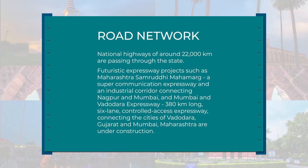Maharashtra Tourism Development Corporation has led to tremendous infrastructure development. The state is well connected to major industrial and consumption centers through road, rail, air, and port connectivity. With power generation capacity of over 43,000 megawatt, Maharashtra ensures 24x7 power supply to its industry. Through Maharashtra Industrial Development Corporation, the state ensures land availability to investors. National highways of around 22,000 km pass through the state. Futuristic expressways such as the Maharashtra Samridhi Mahamarg — a super-communication expressway — and an industrial corridor connecting Nagpur and Mumbai are already under construction.